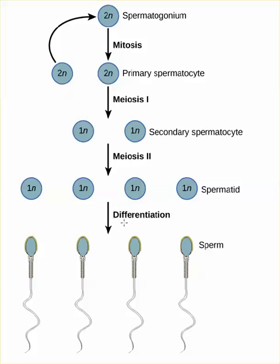Then these cells will undergo, within the seminiferous tubule, the process of differentiation to produce what we regard as the mature sperm cell, or spermatozoa — the cells that will be capable of fertilization. Note the head, which will contain the haploid DNA; the neck, which contains the mitochondria to produce ATP energy; and the flagellum, which will provide mobility for the sperm cell.